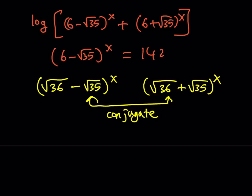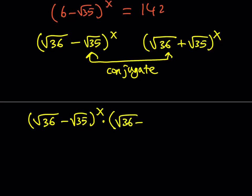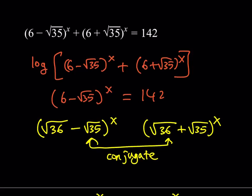Let's multiply these two expressions together: square root of 36 minus square root of 35 to the power x, multiplied by square root of 36 plus square root of 35 to the power x. Since they both have the same exponent, I can just multiply the insides, giving me 36 minus 35 to the power x, which is 1 to the power x, which equals 1. So not only are these conjugates, but their product is 1.